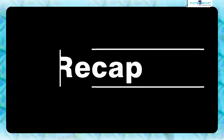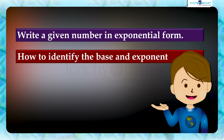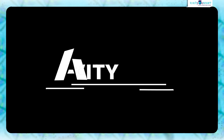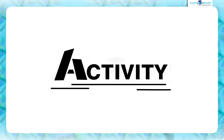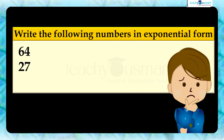Let's have a quick recap. Today we discussed how to write a given number in exponential form and how to identify the base and exponent from the number. Before winding up, let's check how much you understood by doing an activity. Write the following numbers in exponential form: 64, 27, and 125.